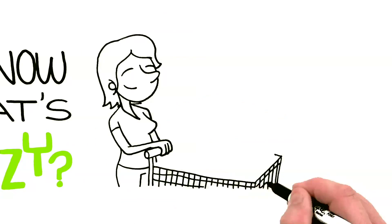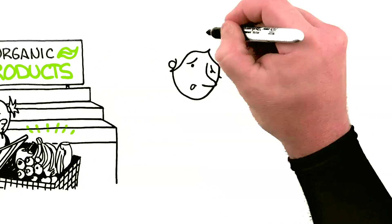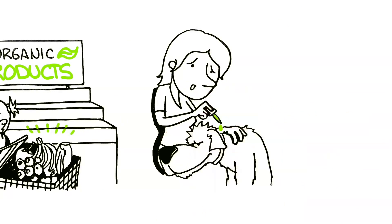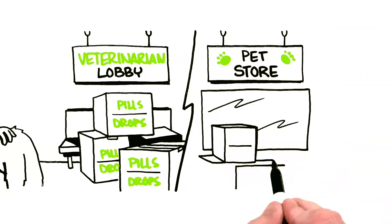You know what's crazy? We buy more and more organic products to avoid exposure to pesticides, yet we put pesticides directly on our dogs and cats, either monthly flea and tick control products like spot drops or as poisonous pills.